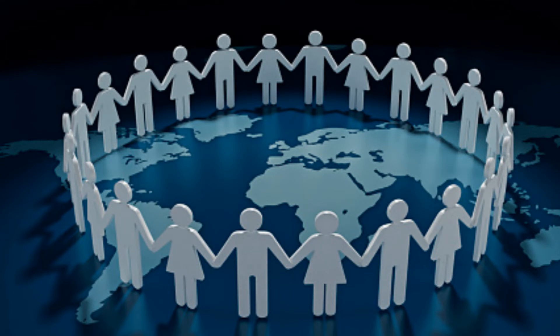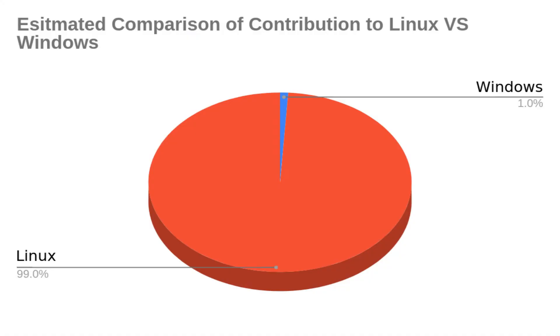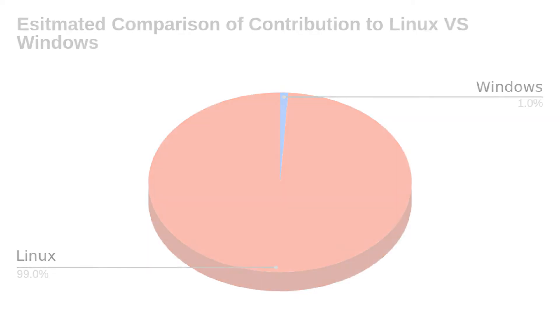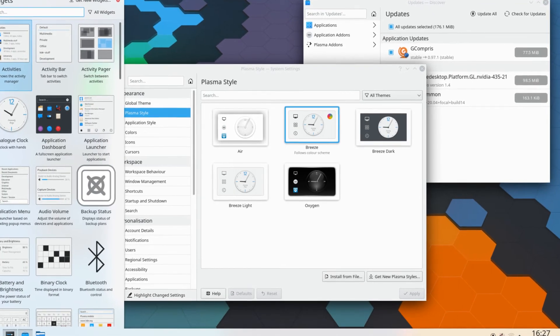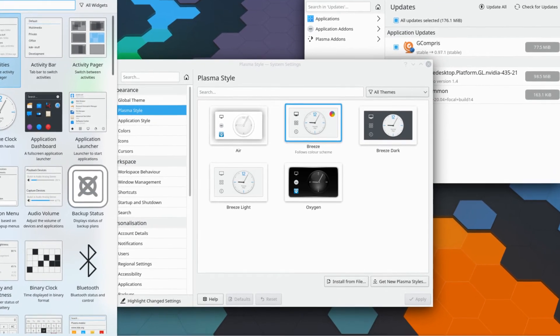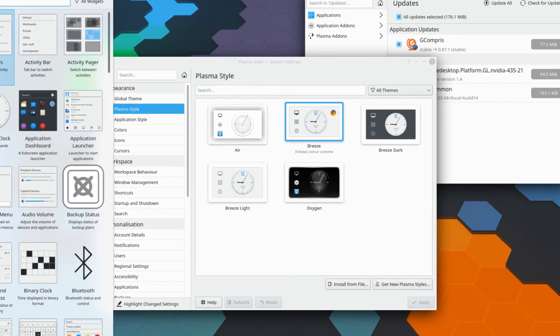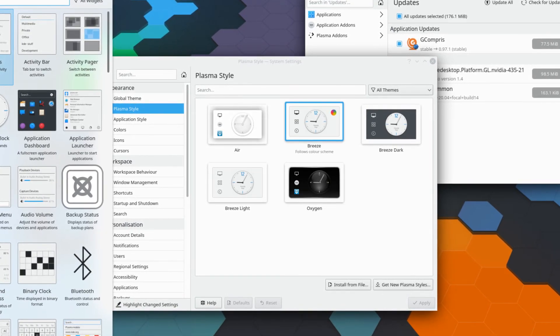Additionally, many companies, teams, and even individual people around the world contribute to the Linux code. Altogether, that's far more people working on Linux than the comparatively small number of, say, Microsoft employees working on Windows. Because of this, Linux is much faster, much more flexible, and much safer than Windows and macOS — and certain distros even get flashy new features that just aren't available on any other operating system.